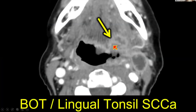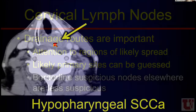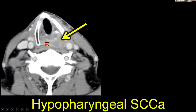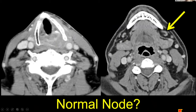Borderline suspicious nodes elsewhere may be less suspicious if the lymphatic drainage doesn't make sense. If I have a hypopharyngeal squame centered in the hypopharynx behind the cricoid and I have a lymph node up high under the mandible, that drainage doesn't make sense. If this has never been treated, I know those nodes are going to drain down and towards the heart, so a lymph node up high is going to be less suspicious in that case.